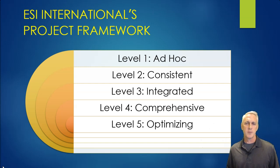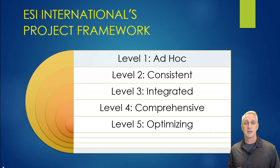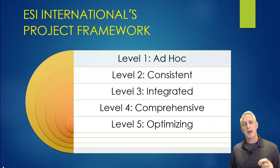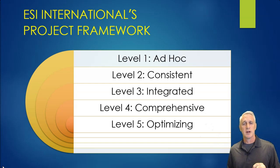ESI International's Project Framework starts with an ad hoc process at level one — you're just making it up as you go along. Level two is where you have a consistent process for managing projects. Level three is where you've really integrated it within your structures. Level four is comprehensive, and level five is optimizing that comprehensive approach. This one seems to represent a more natural tier of progression in sophistication, particularly for complex projects.